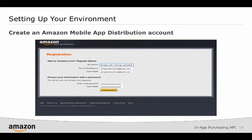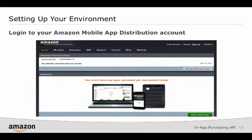Before you can add in-app purchase items, you must first have an Amazon mobile app distribution account. Log in to your account, click on My Apps and then Add a new app to create a new app. For now, enter the app title and category. Click Save and then at the top of the screen find the link for in-app items. Clicking on this link brings up the in-app items main page where you can add your in-app purchase items.